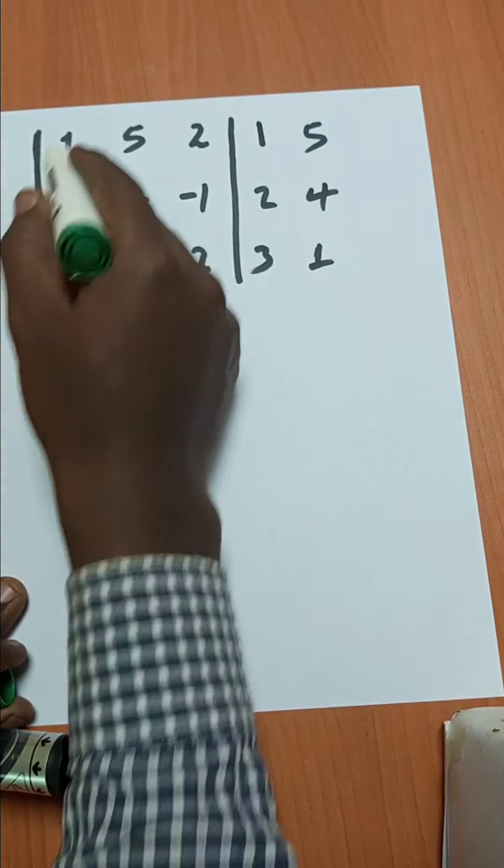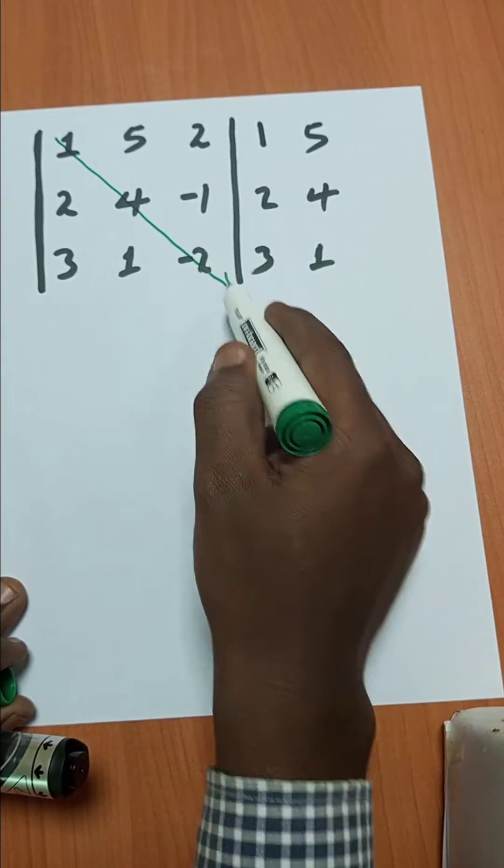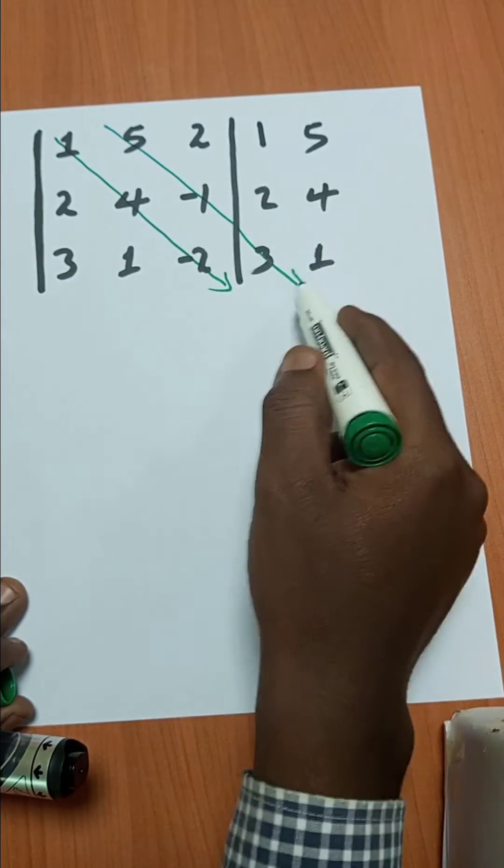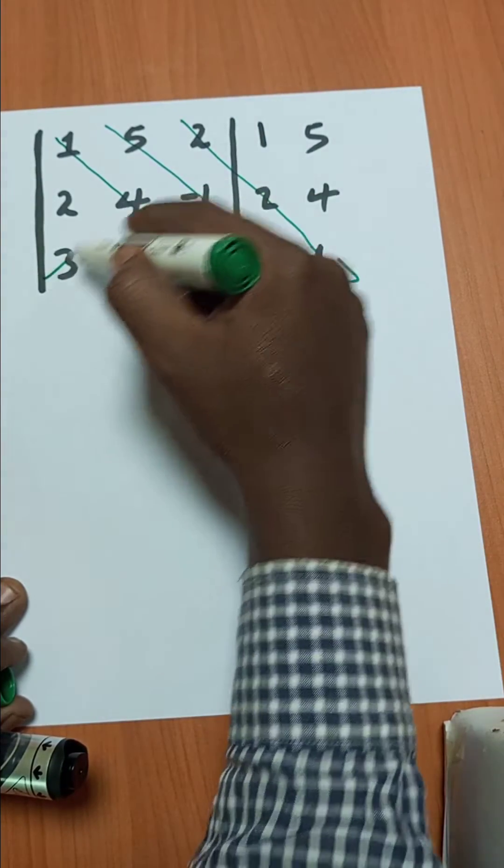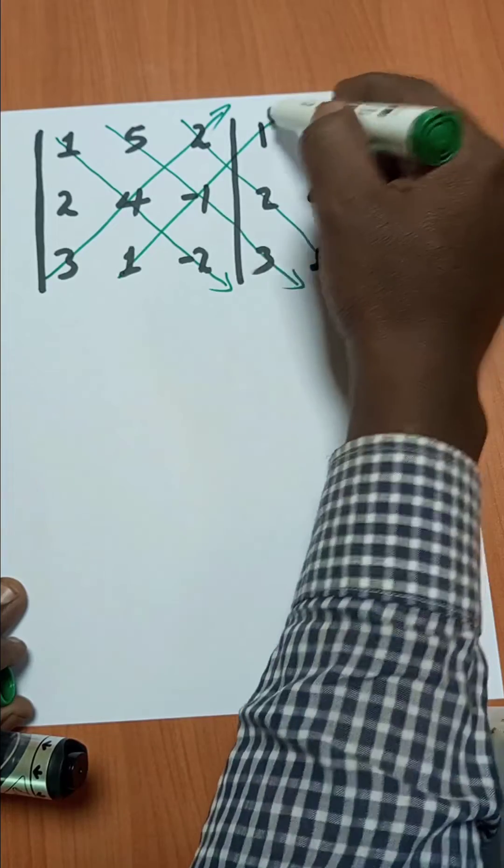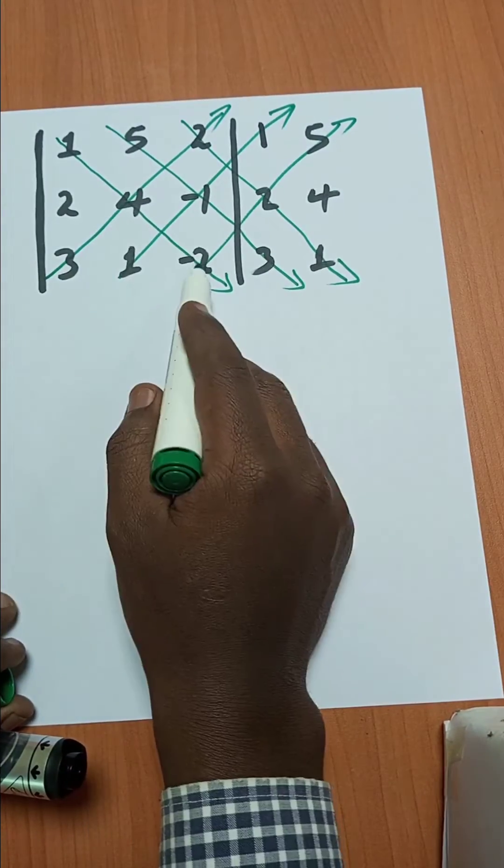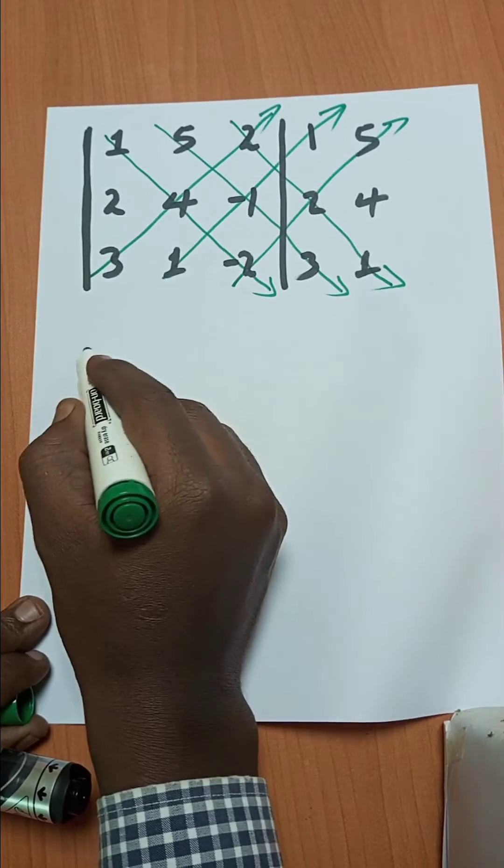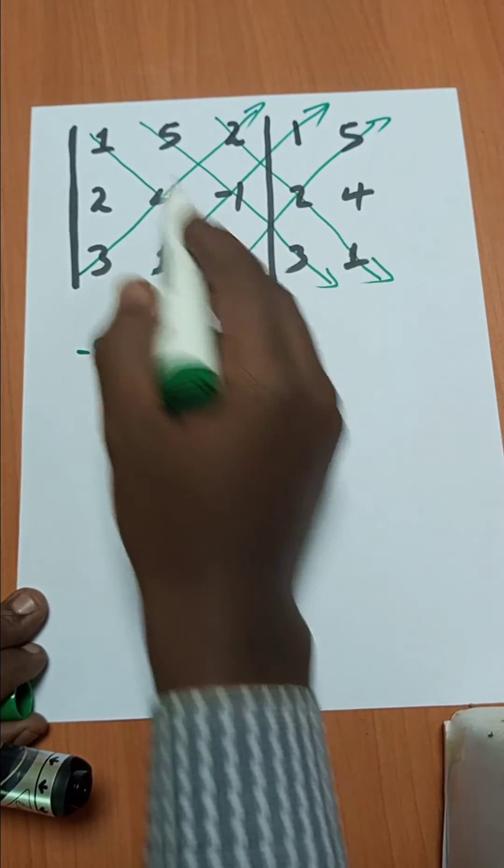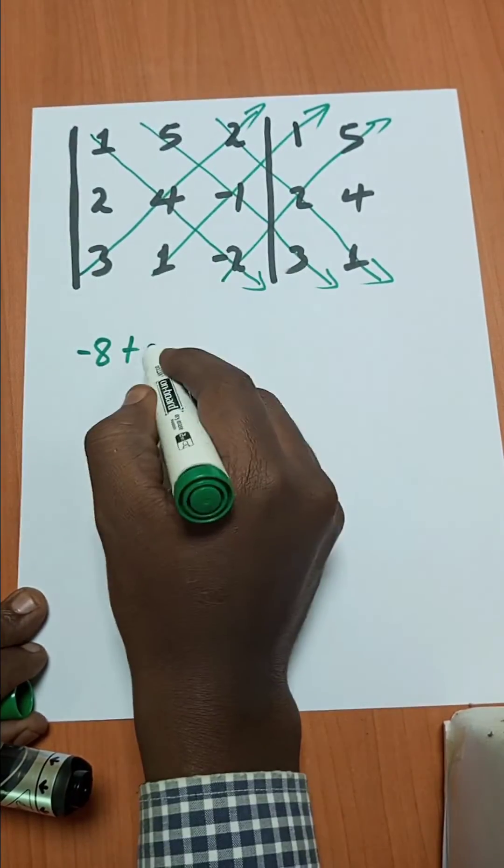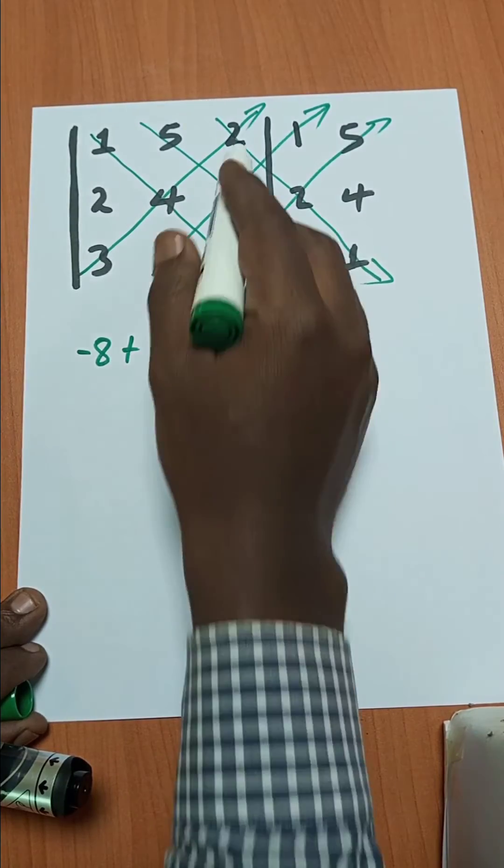There are three diagonals here. Take the first diagonal, then this diagonal, then this one. Take the product of each triple diagonal. Let's see: one times four times negative two, which is negative eight, plus five times minus one times three, negative fifteen, plus two times two times one, which is four.